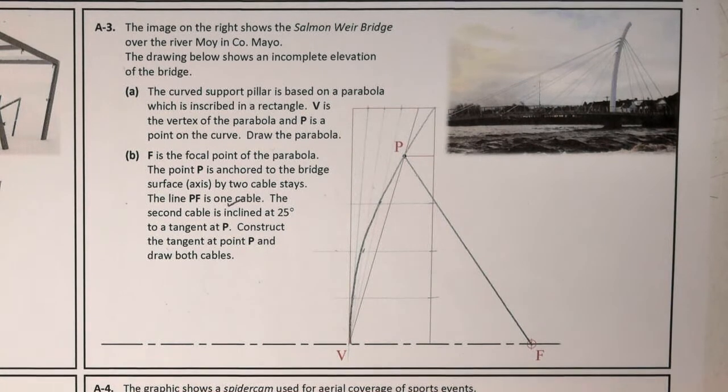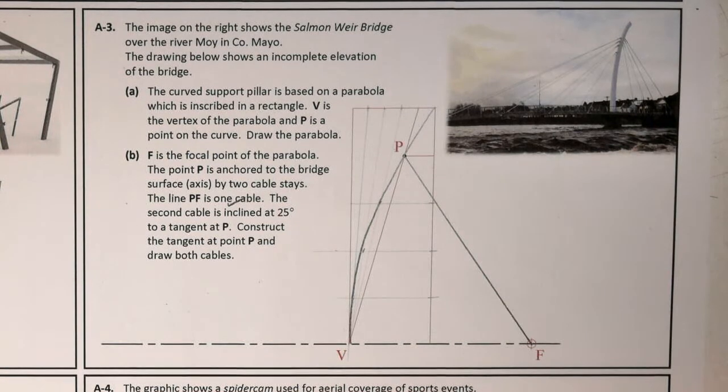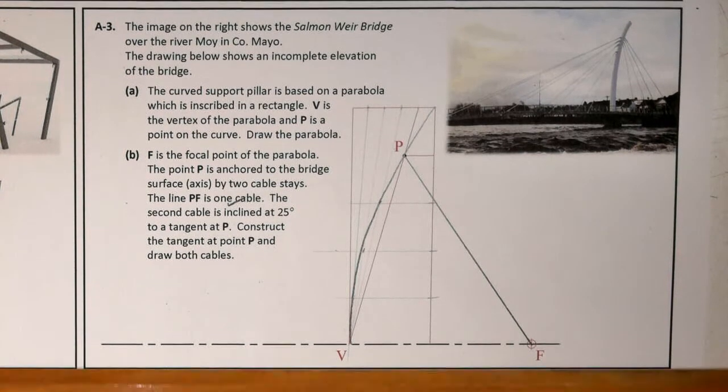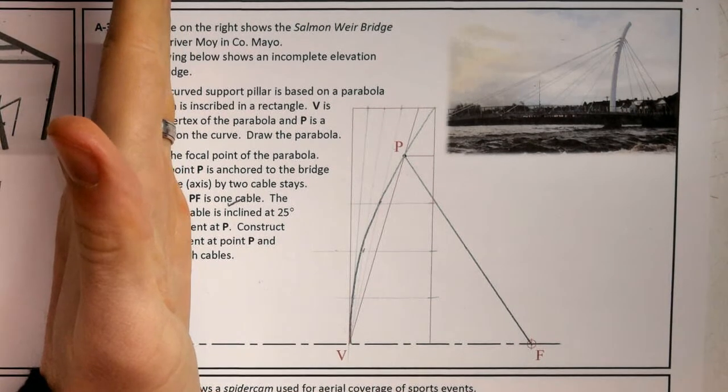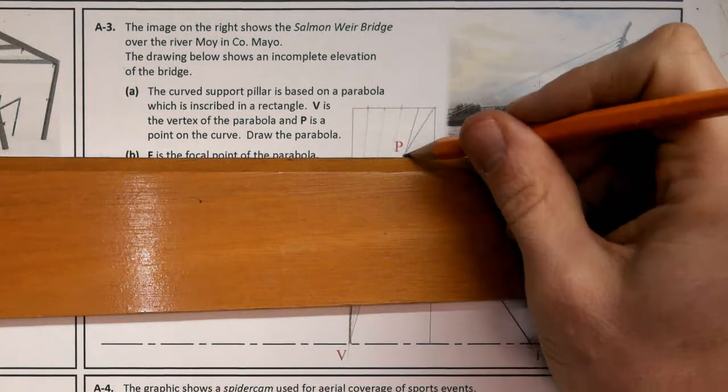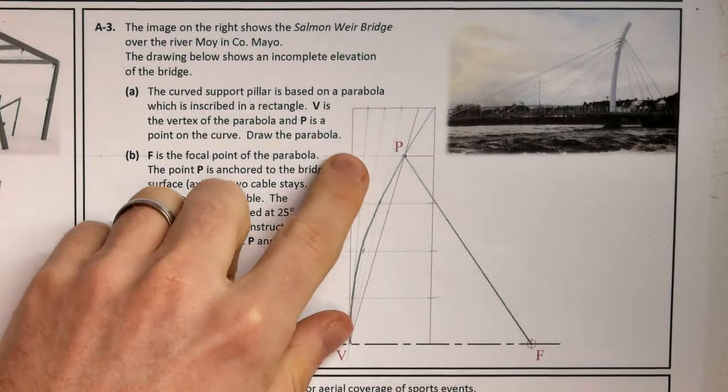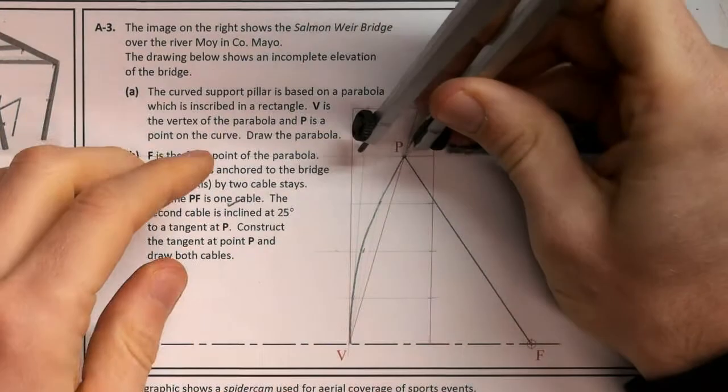Then the second cable, we need to draw a tangent. So a couple of methods for this. The way they're trying to get us to do it, I presume, is because of the parabola, is the method whereby if you imagine our directrix would be over here. So I'm going to draw a line toward the directrix and if I bisect this angle that will give me the position of the parabola.